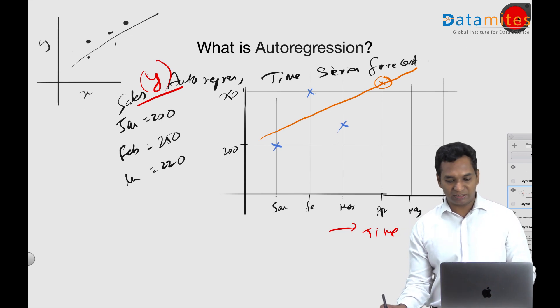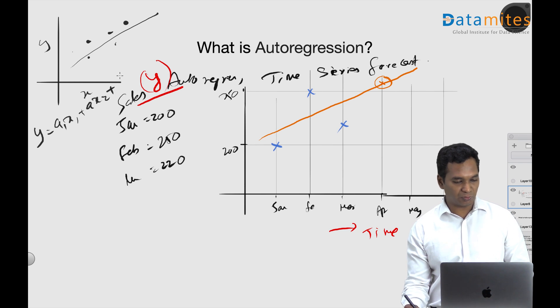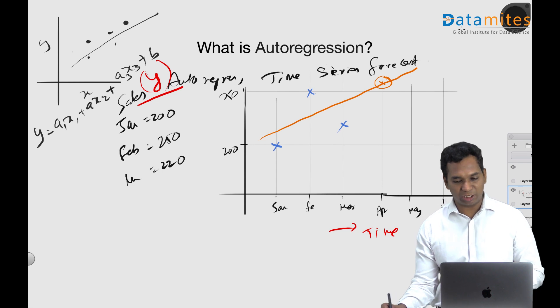Mathematically, if you want to look at this, a traditional regression is y equals a1 x1 plus a2 - if you have more than one variable - so a2 x2, a3 x3, and then you have b.